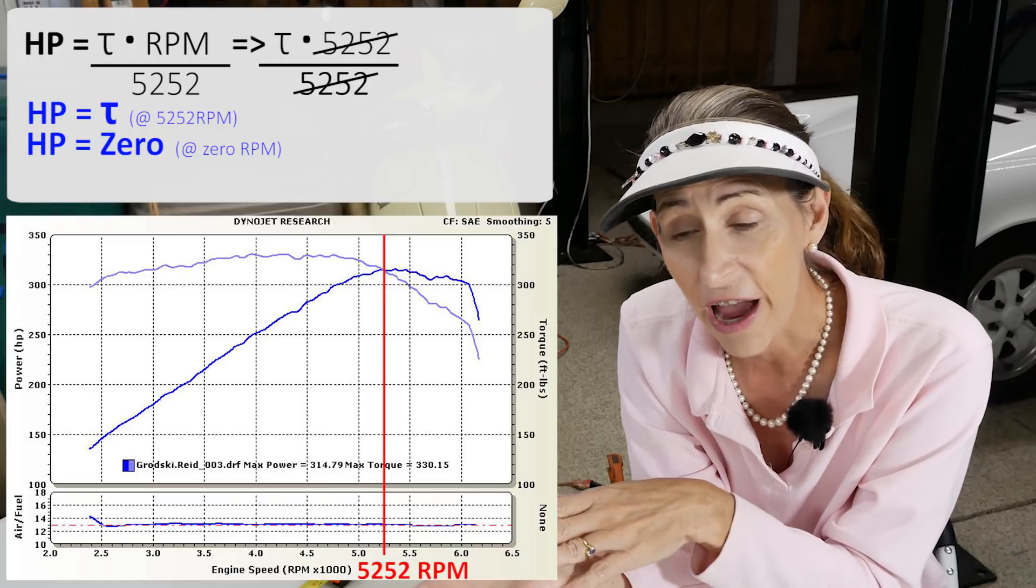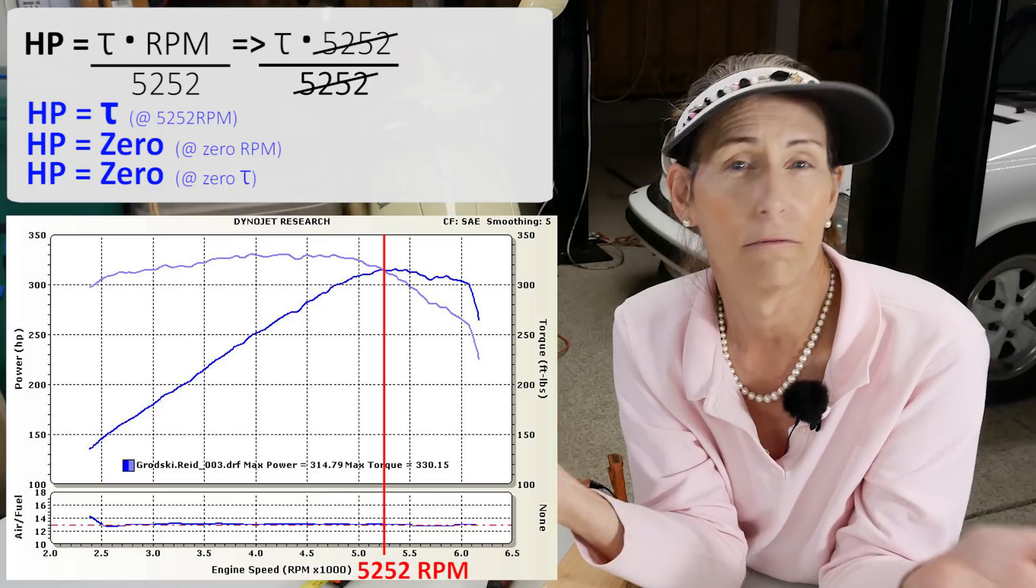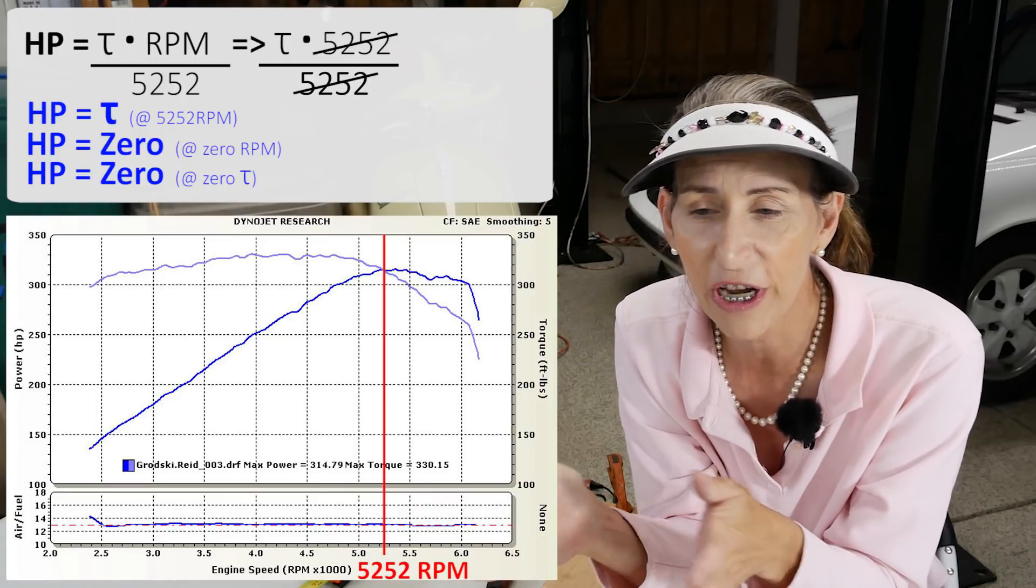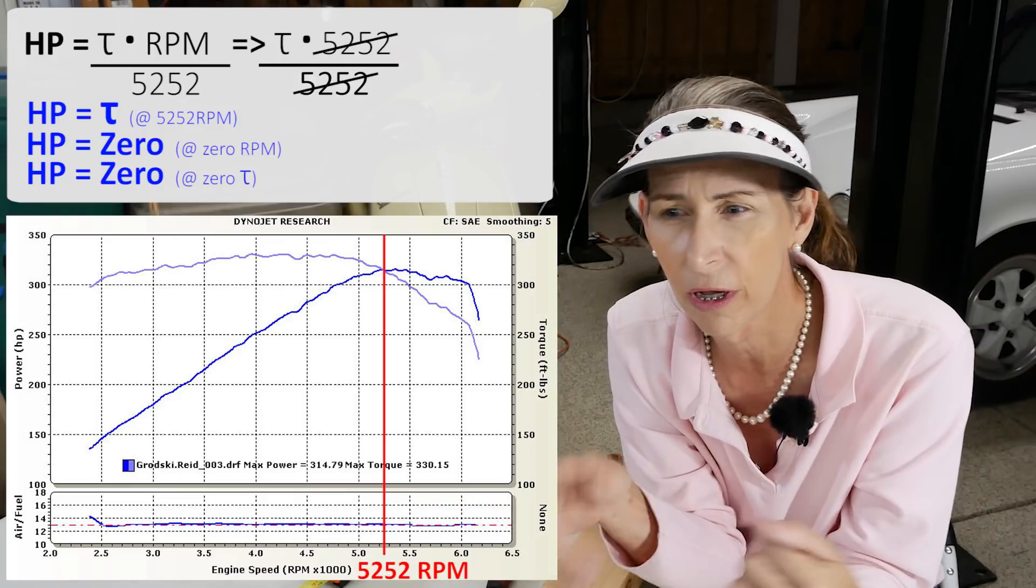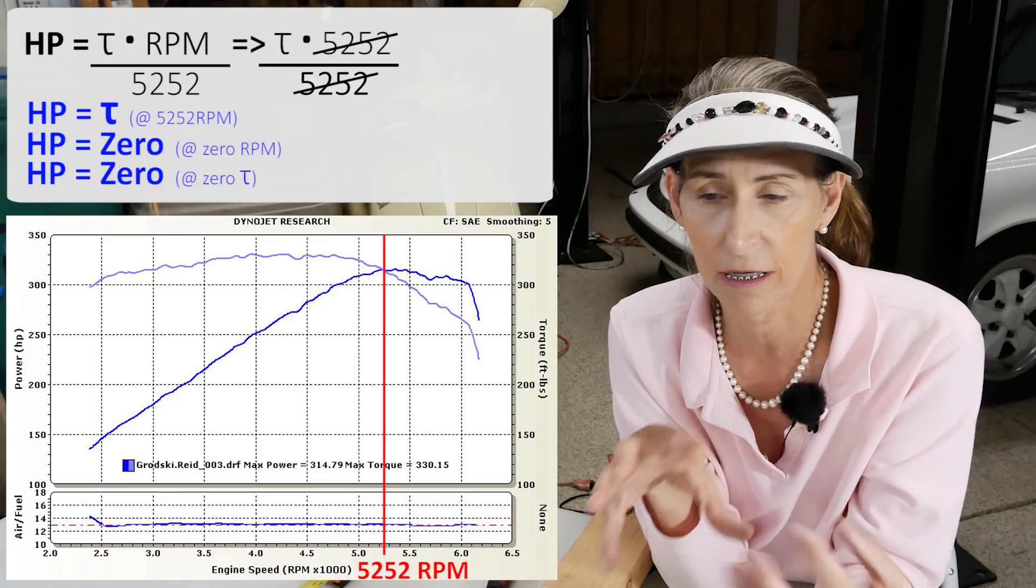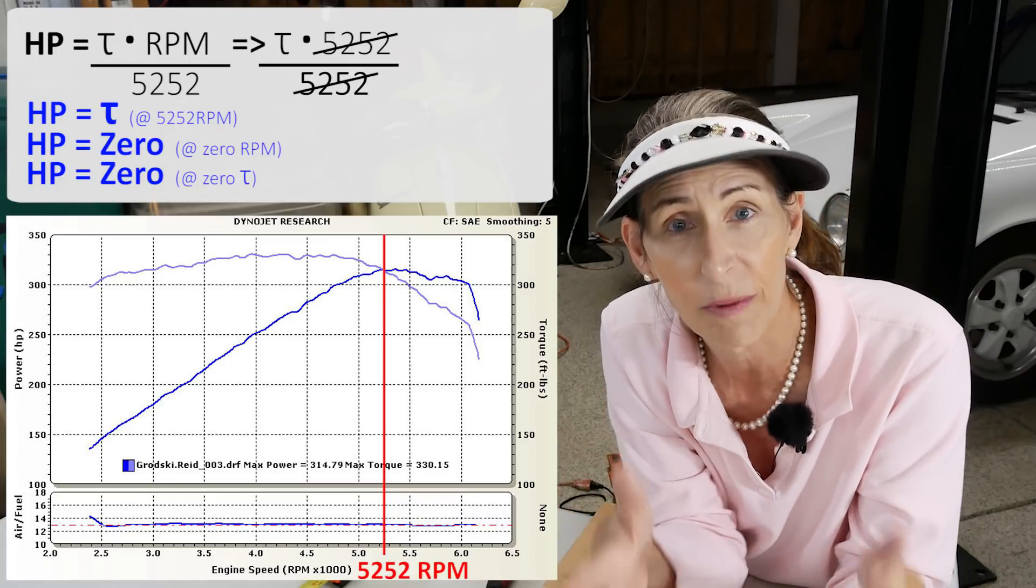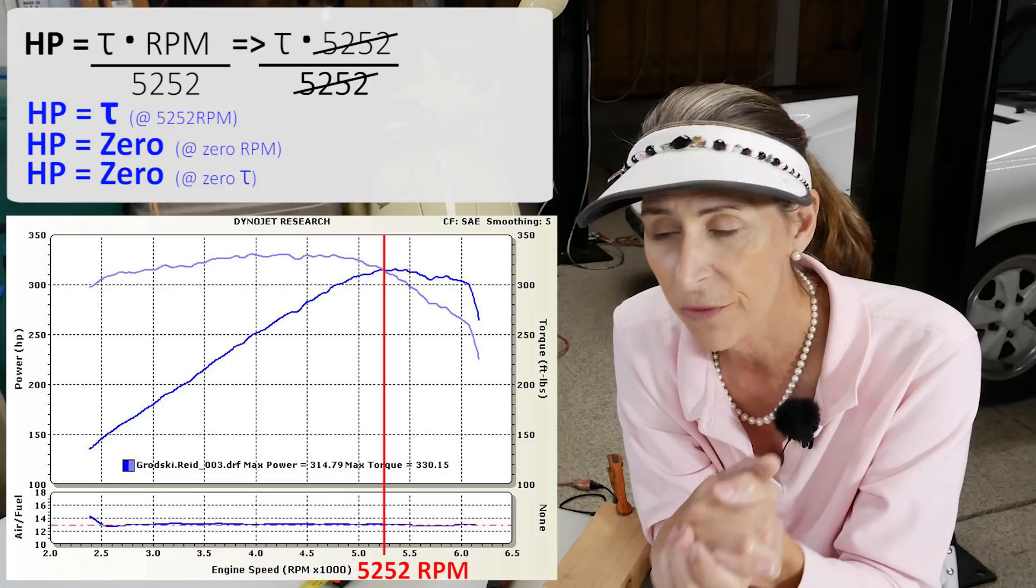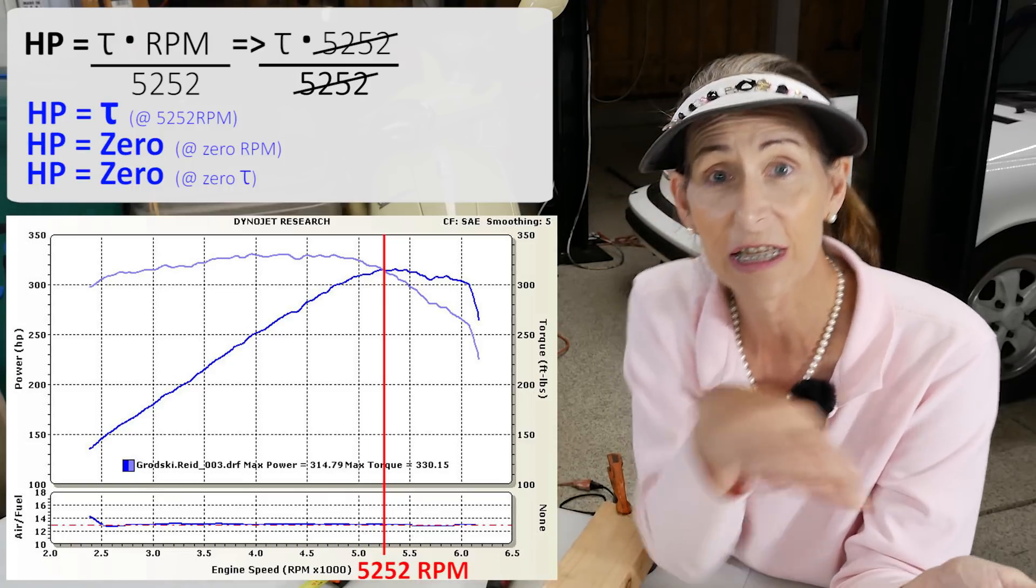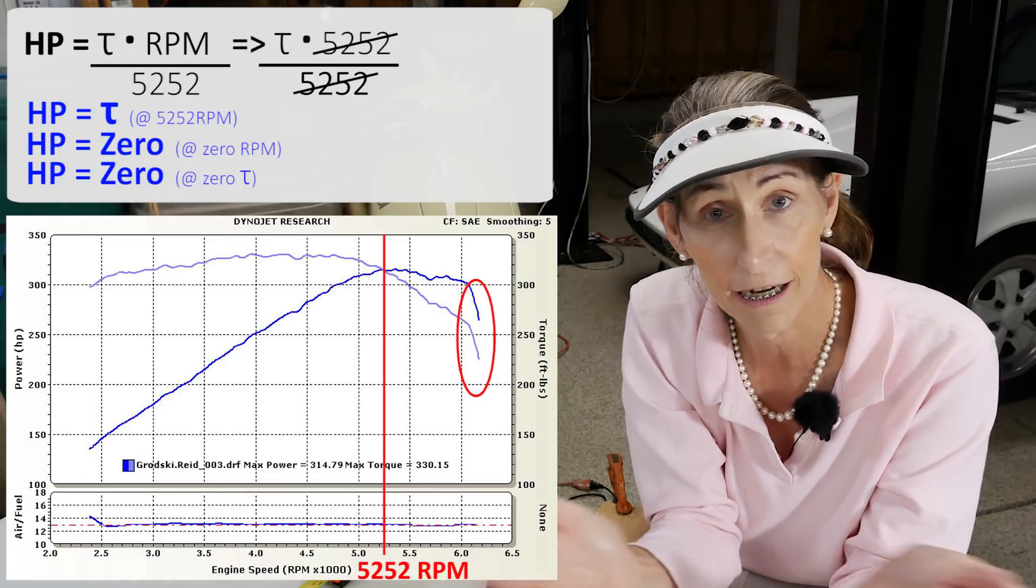And then on the other end of that, if the engine puts out zero torque, then the horsepower is zero, doesn't matter what the RPM is. So that would be a point at which either the electric motor or the piston engine is spinning so fast that every bit of power that it puts out is going into actually spinning the motor or spinning the engine. So at that point, the output torque is zero. So it doesn't matter what the RPM is. So those graphs will always drop off and you'll see torque go down to zero. So that's that.